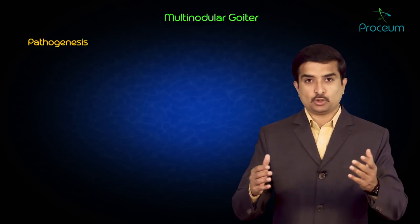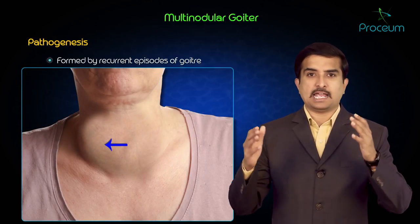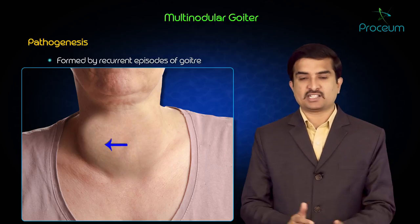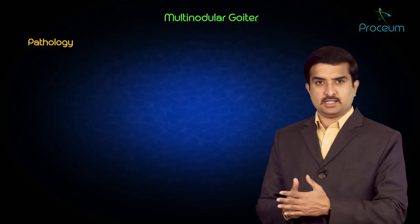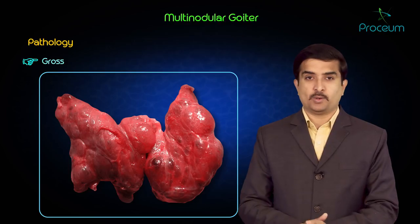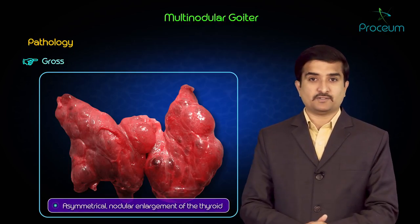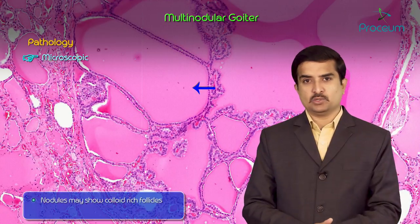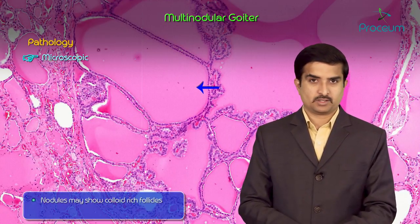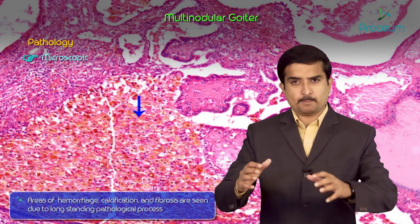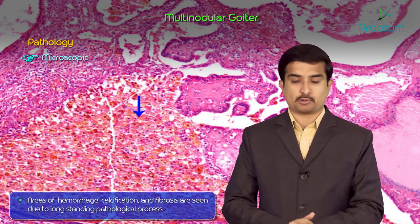Regarding pathogenesis, multinodular goiter is mainly formed by recurrent episodes of simple goiter. In terms of pathology, the gross picture shows asymmetrical nodular enlargement of the thyroid. The microscopic picture shows individual nodules with colloid-rich follicles and follicular epithelial hyperplasia. There are also areas of hemorrhage, calcification, and fibrosis, seen mainly due to the long-standing pathological process.